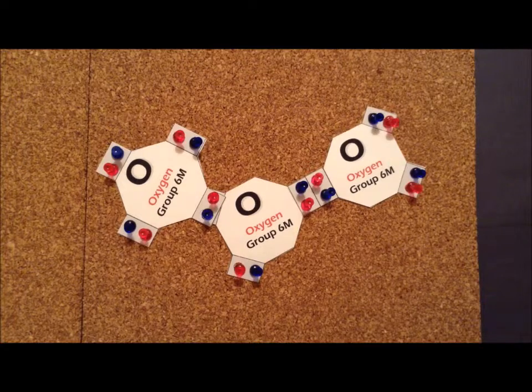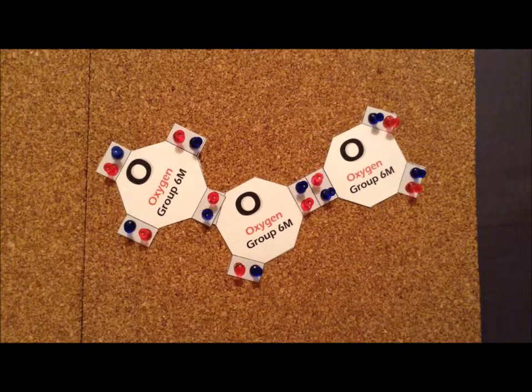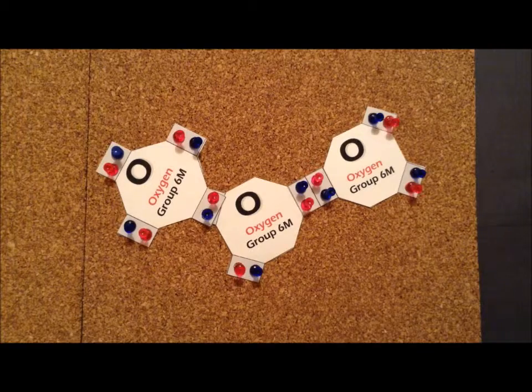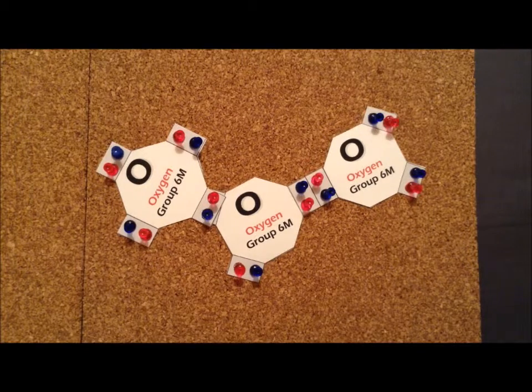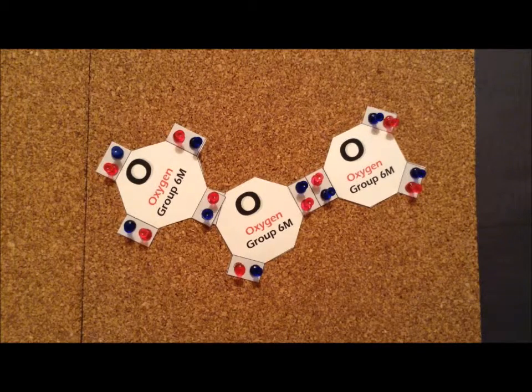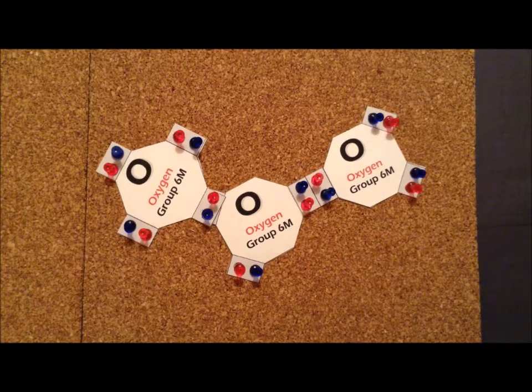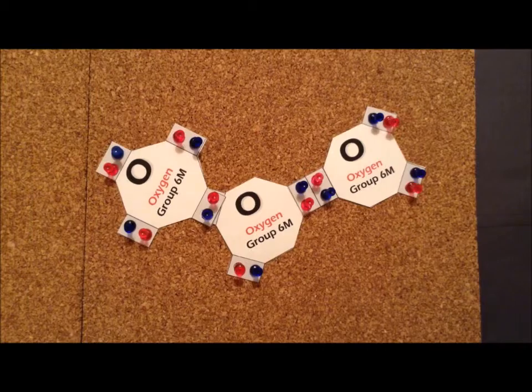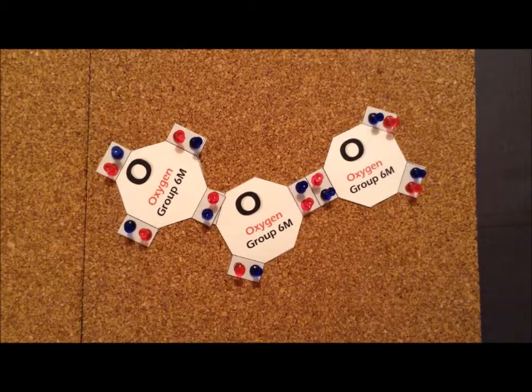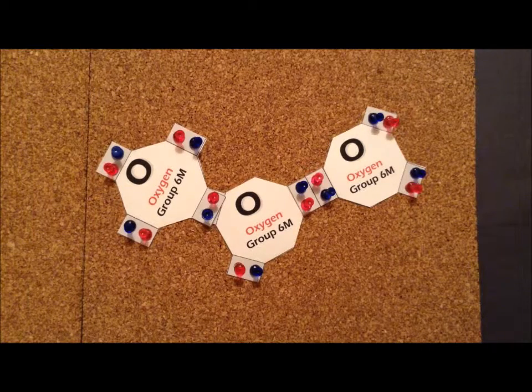Each oxygen atom contributes six valence electrons, therefore we need 18 electrons for this molecule. Since oxygen is in the second row, we need to satisfy the octet for each oxygen atom, but we're not permitted to expand the octet beyond eight electrons.